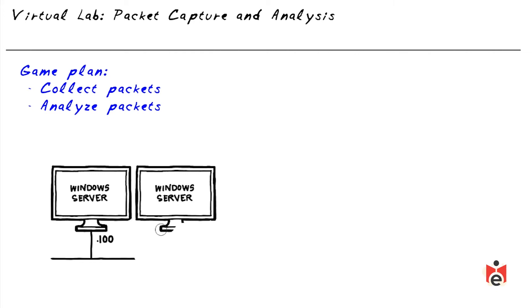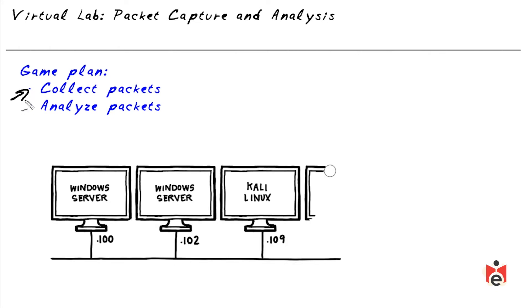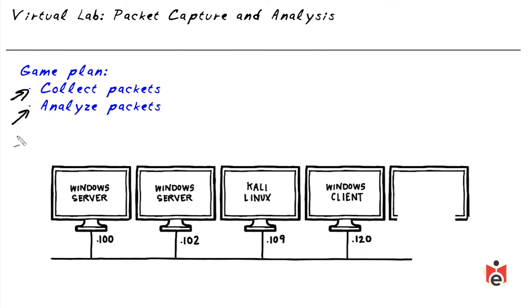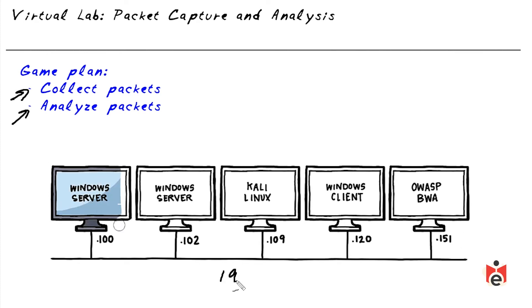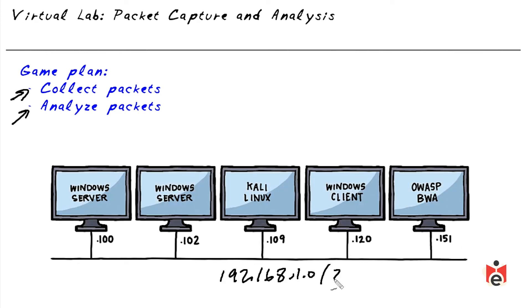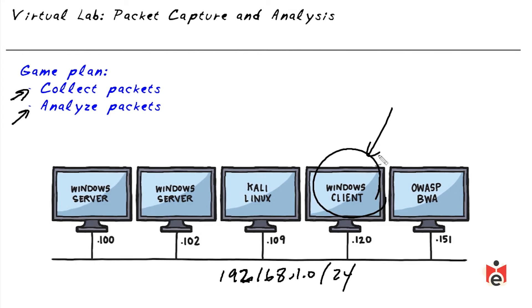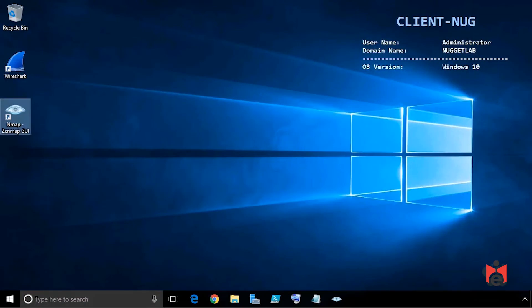Here's the game plan for the lab. After launching the lab we'll first collect packets then analyze them. The network is the 192.168.1.0 network. We'll use the Windows client, launch Zenmap to scan the network, and simultaneously run Wireshark to capture packets. Once the scan finishes, we'll use Wireshark as a protocol analyzer to analyze the captured packets.